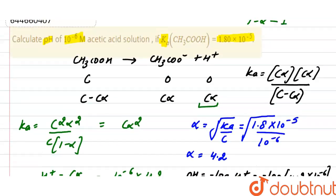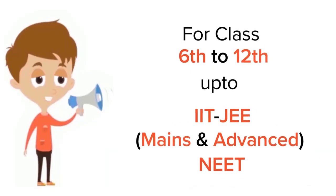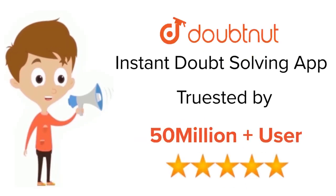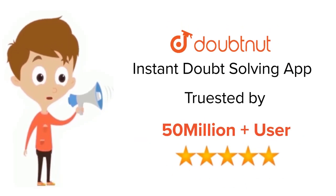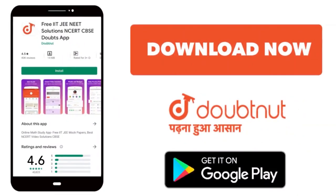So the pH of this acetic acid solution is 5.38. For class 6 to 12, IIT-JEE and NEET level, trusted by more than 5 crore students — download DoubtNut.